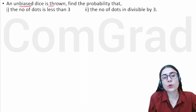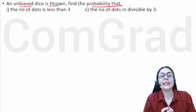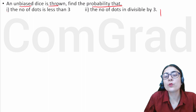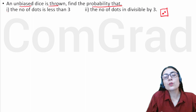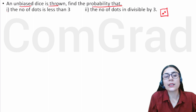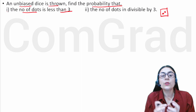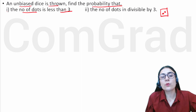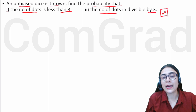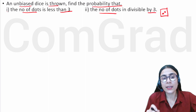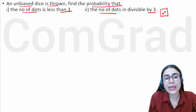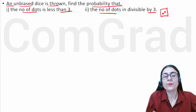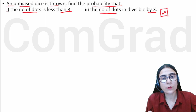An unbiased dice is thrown. Find the probability that: first, the number of dots is less than 3; and second, the number of dots is divisible by 3. A dice is like Ludo — the numbers go from 1 to 6. We have two cases to solve.